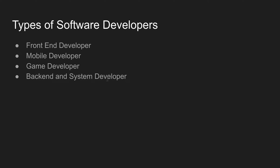Next is back-end system developers — this is an important developing role. Front-end developers, mobile developers — all of them rely on back-end developers. Back-end developers build the back-end framework. For example, on the Amazon website, when you buy a product, the back-end handles all transactions and data. Back-end developers develop APIs that front-end and mobile developers consume.